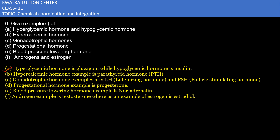Starting with question number one: the hyperglycemic hormone relates to a condition of high blood sugar, and the example is glucagon. For hypoglycemic hormone, which relates to low blood sugar, the example is insulin.